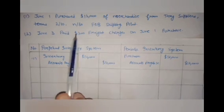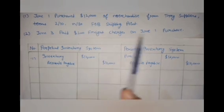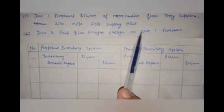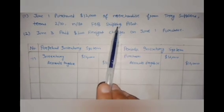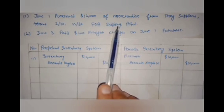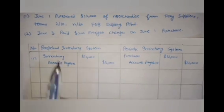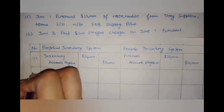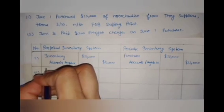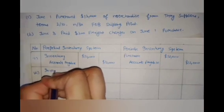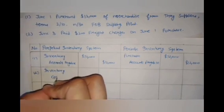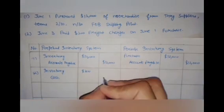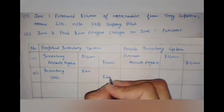Next, freight charges of $200 were paid on the June 1st purchase. As explained earlier, under FOB shipping point the buyer will pay the freight charges. The general entry under the perpetual inventory system will be: Inventory debit, Cash credit $200.